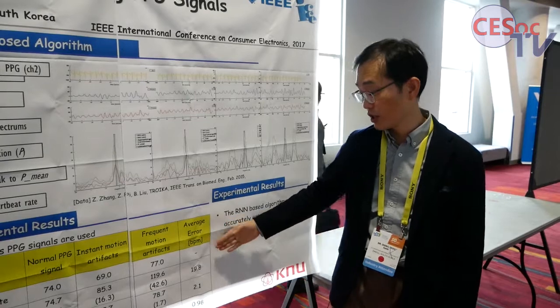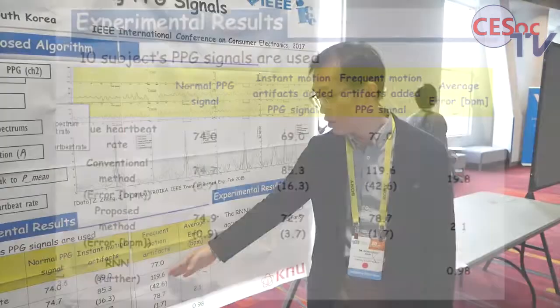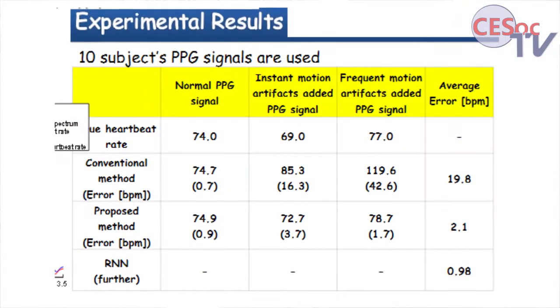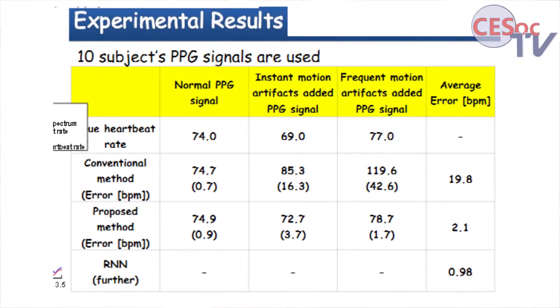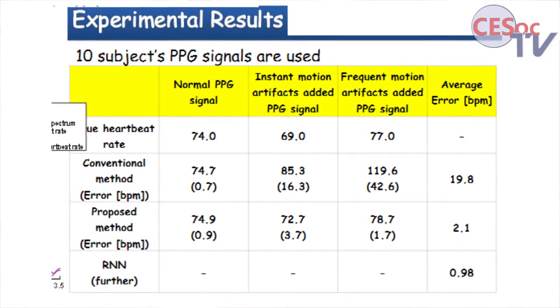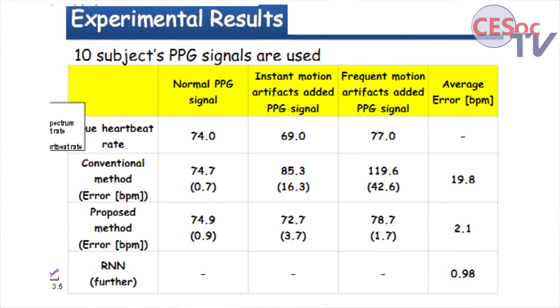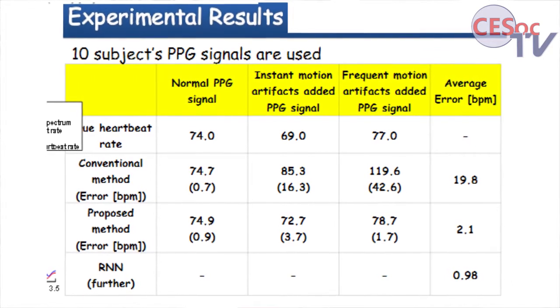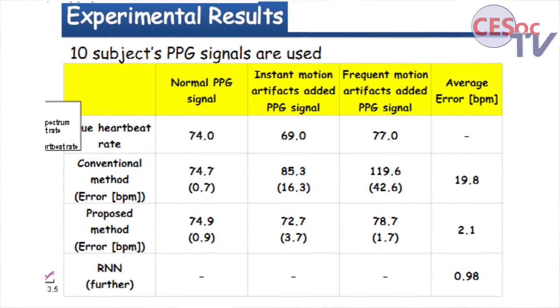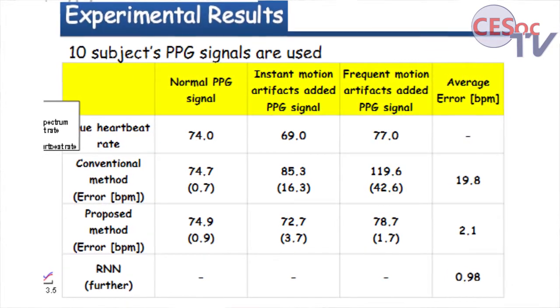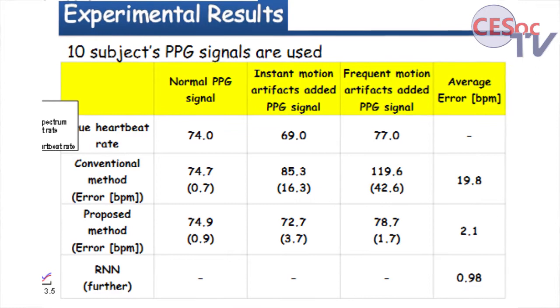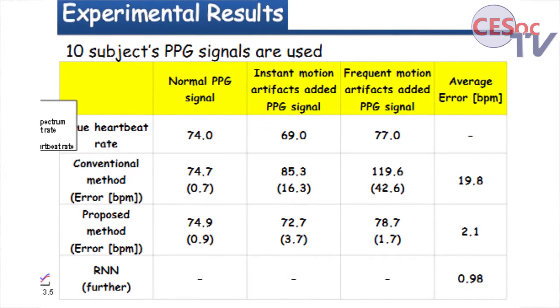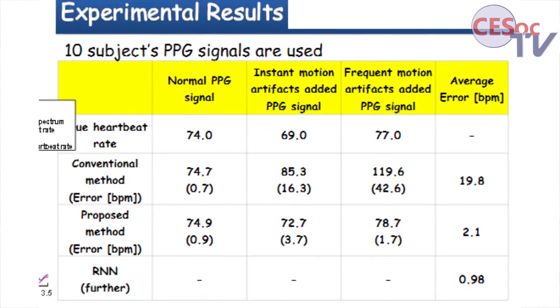Look at the result. This is the conventional way — with only one sensor, the error is around 20 beats per minute. For our proposal, it has been reduced significantly. It's only 2.1.